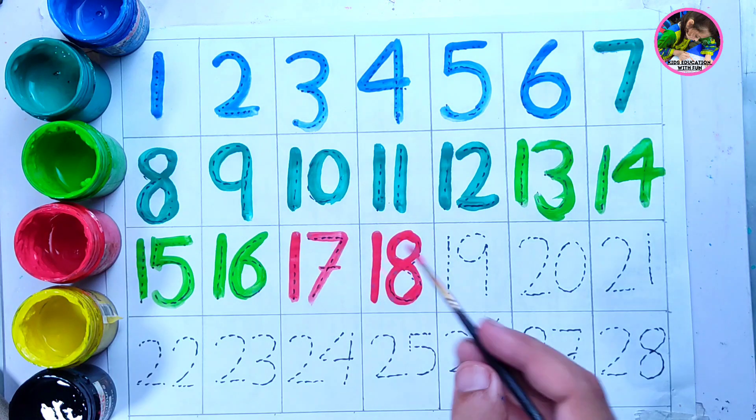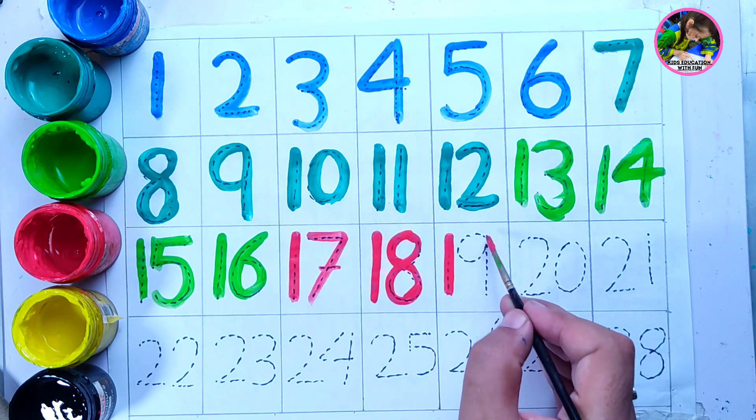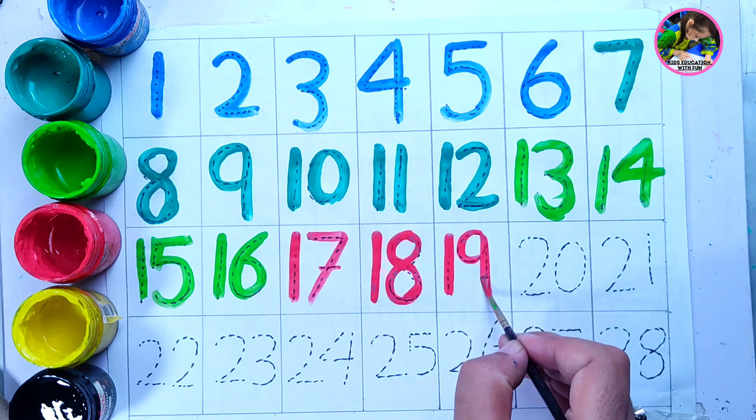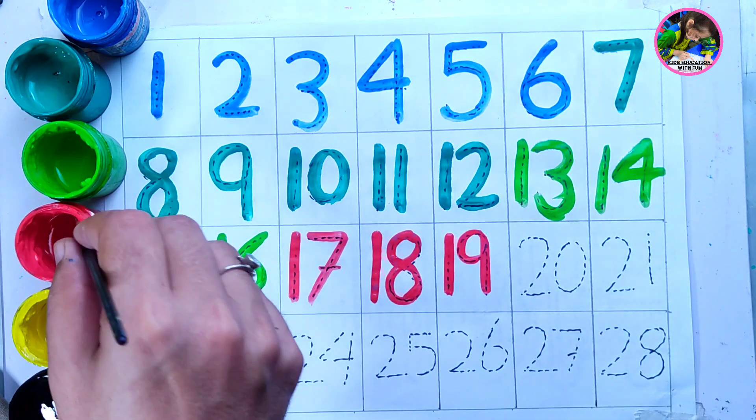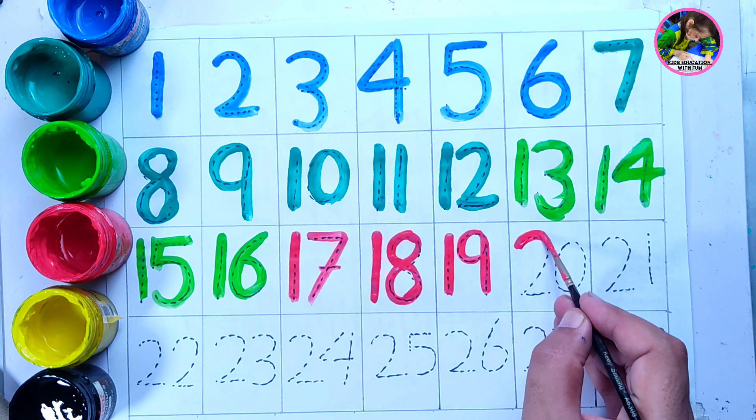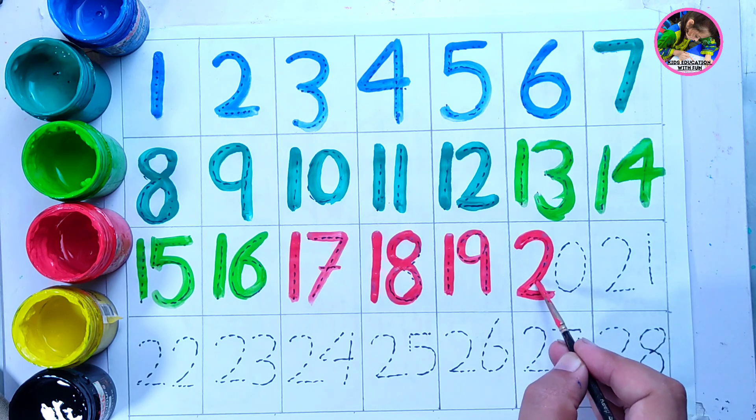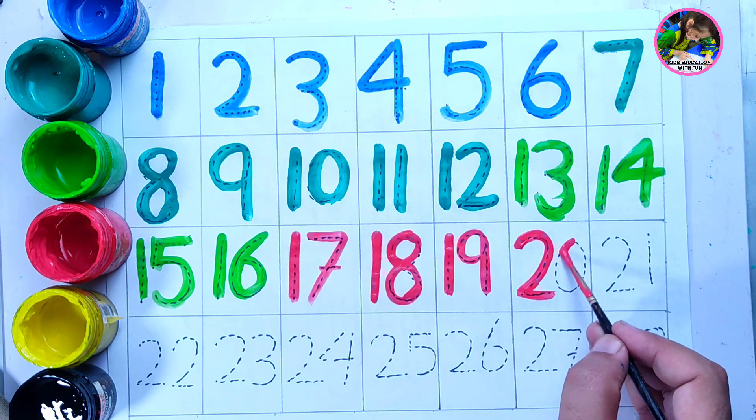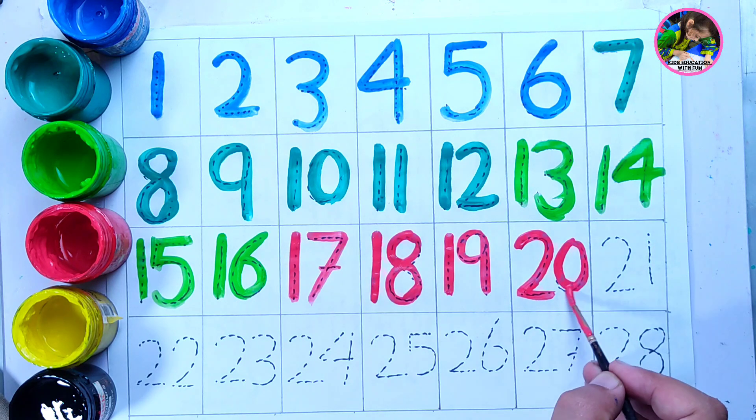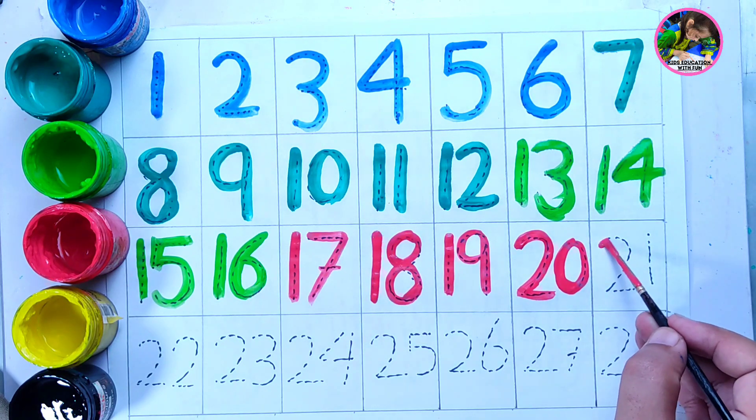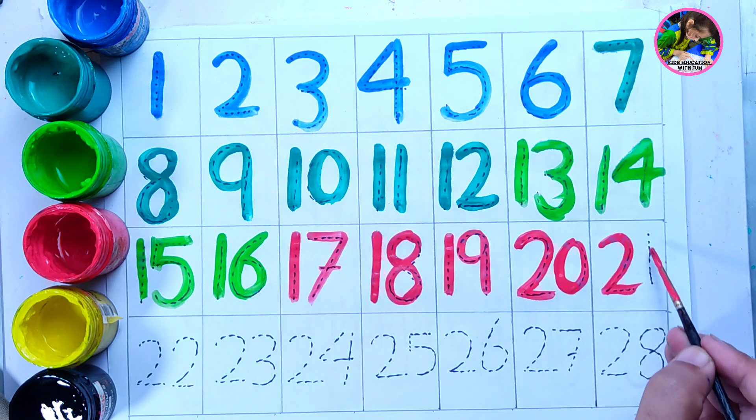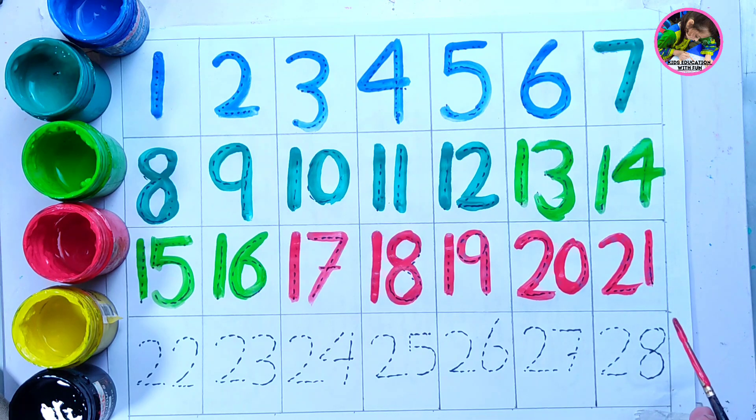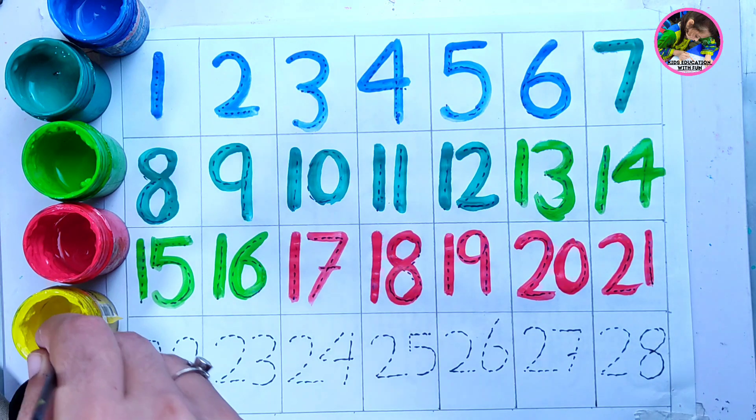17, 18, 19, 20, 21. So this is red color, and now is yellow color here.